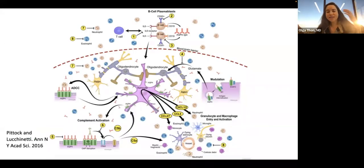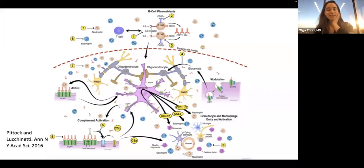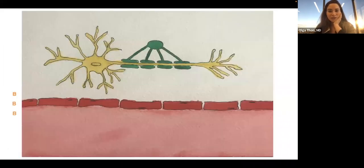How does the disease happen? This is a diagram by Sean Pittock published in 2016. Here's the blood-brain barrier and you can see an astrocyte living its life — surrounded by myelin. In green you can see the oligodendrocyte. Now what we're going to see is a T-lymphocyte that decides to cross the blood-brain barrier. Once it crosses, it starts secreting cytokines like TNF-alpha and interleukin-6, because the T-lymphocyte doesn't like to be alone — it recruits friends.